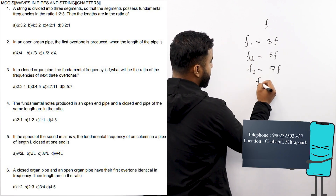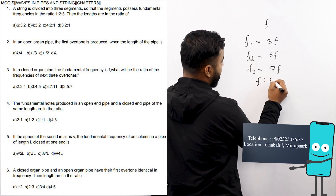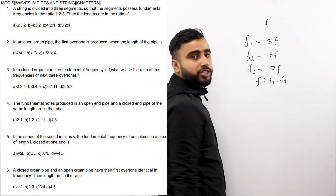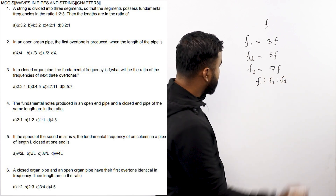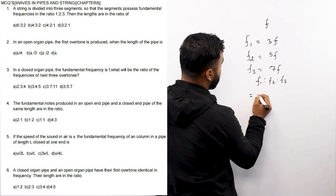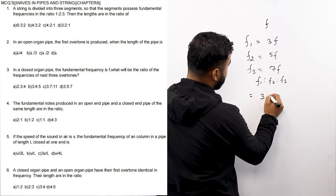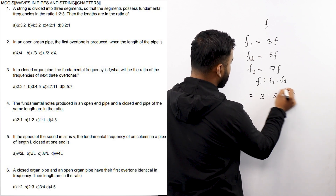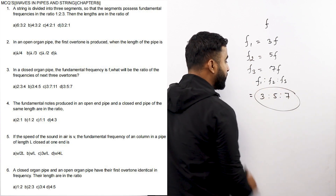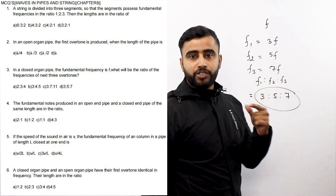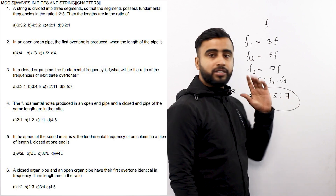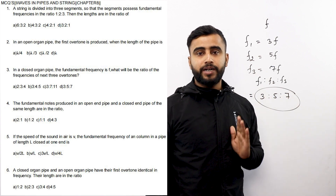So the first three overtones are 3f, 5f, and 7f. The ratio F1:F2:F3 is 3:5:7, which is the correct answer.